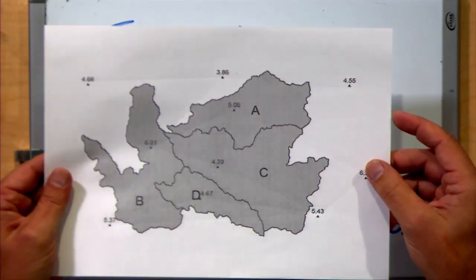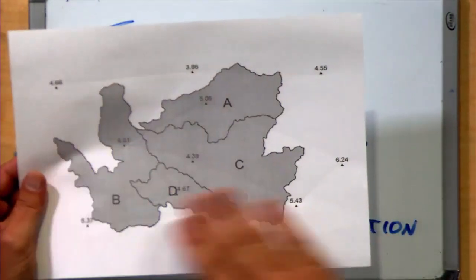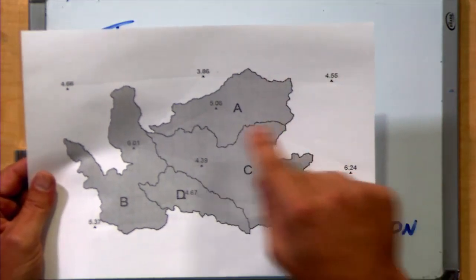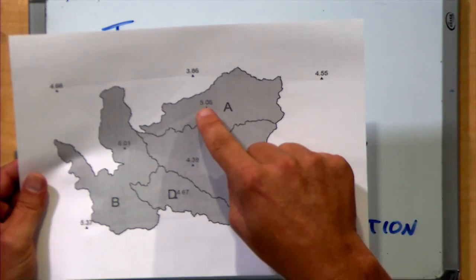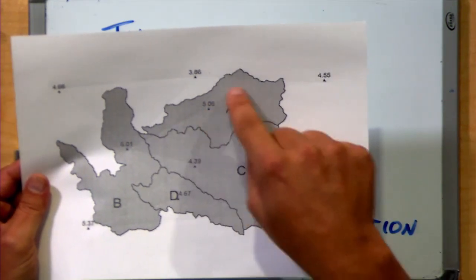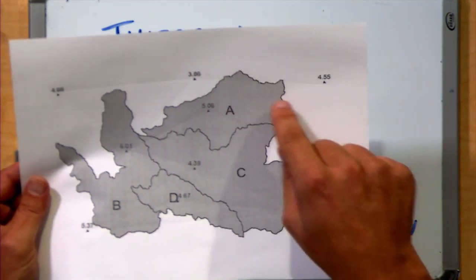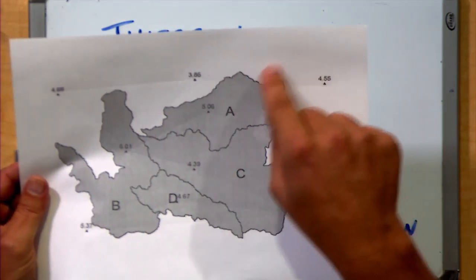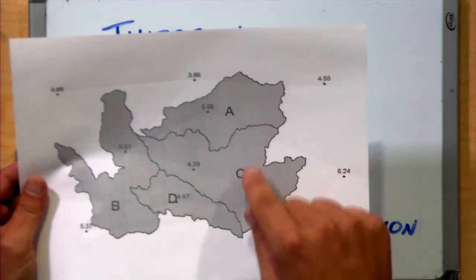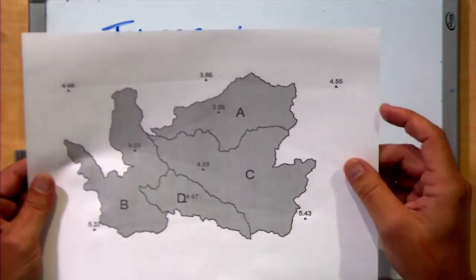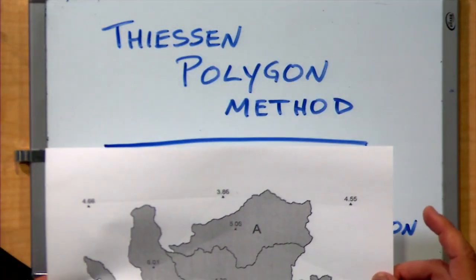These rain gauges are giving precipitation estimates around a set of watersheds. We're interested in partitioning out the area of our map here and associating parts of this area with different rain gauges. For example, this area 5.06 could be associated with watershed A, but there's parts of the watershed here that are more likely to have values closer to this rain gauge value. That's the goal of the Thiessen Polygon Method.